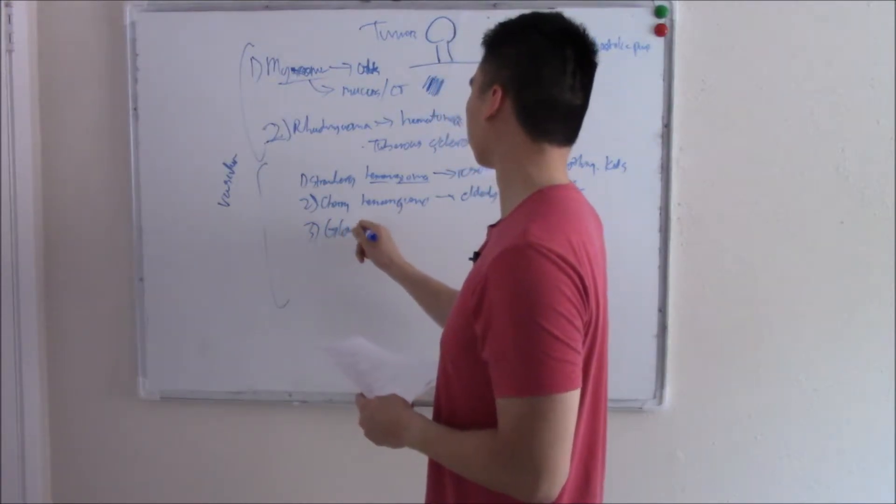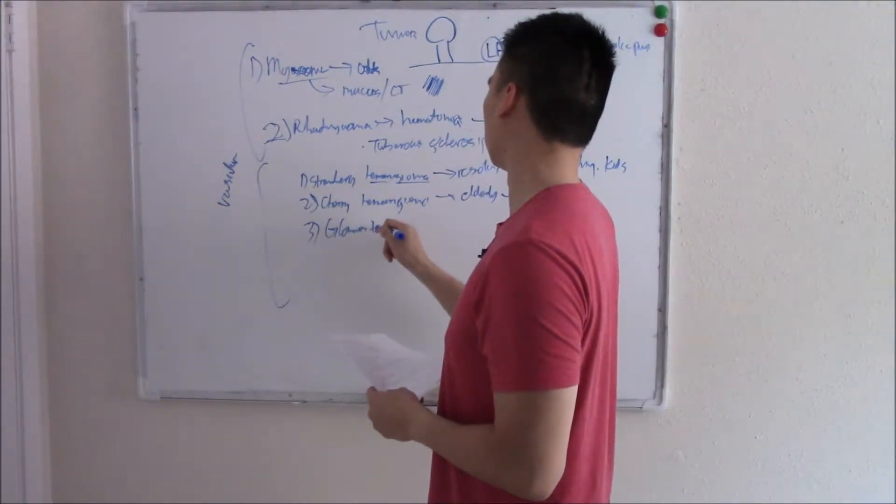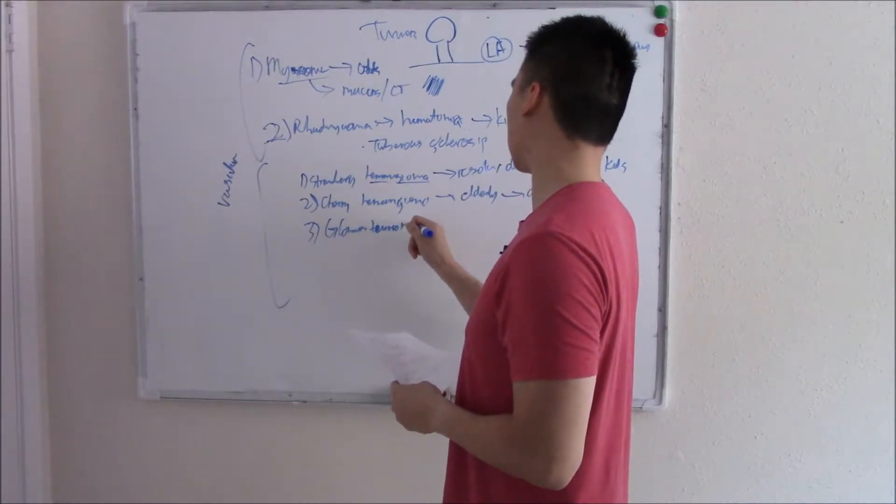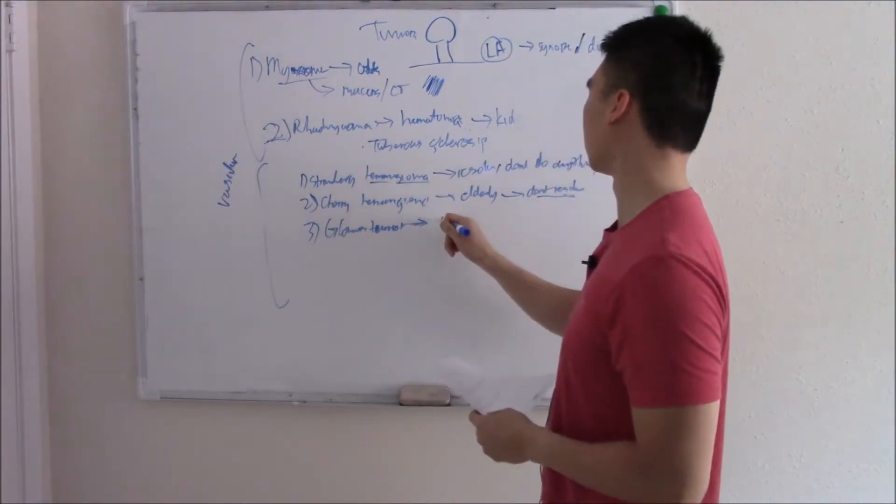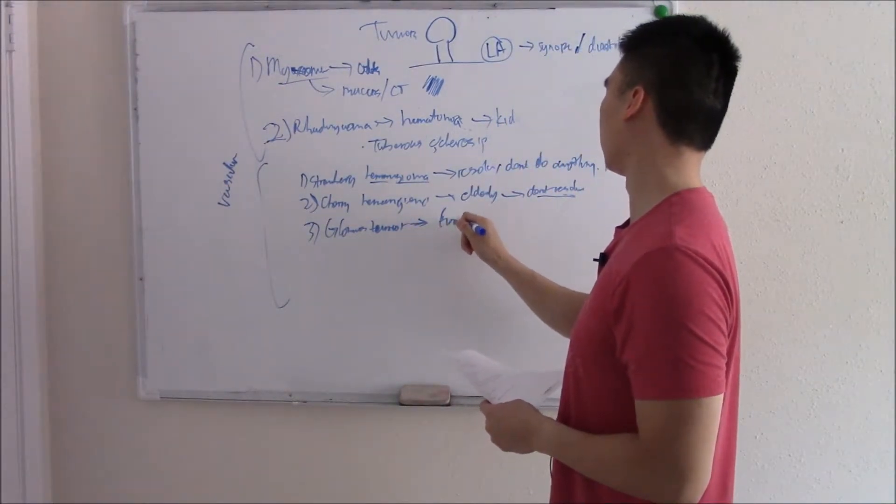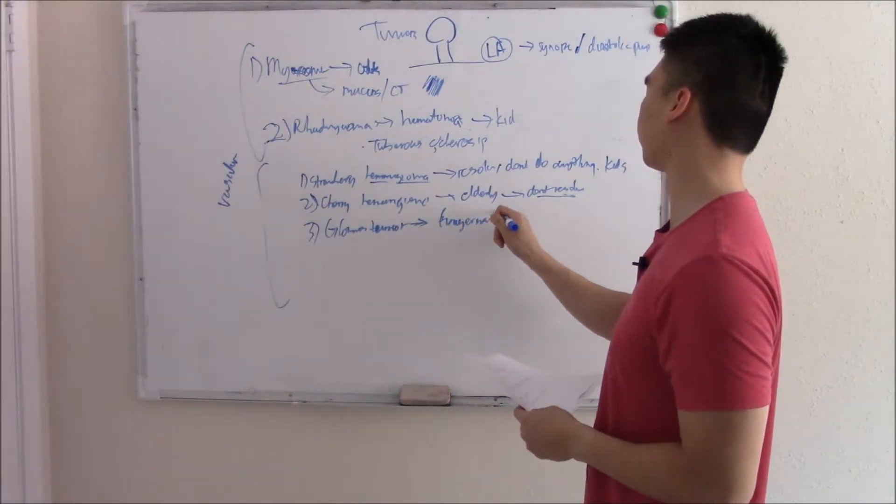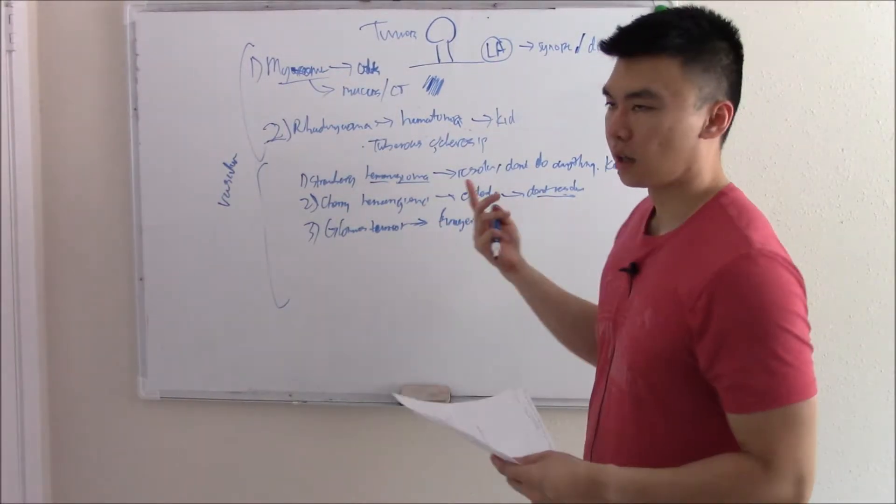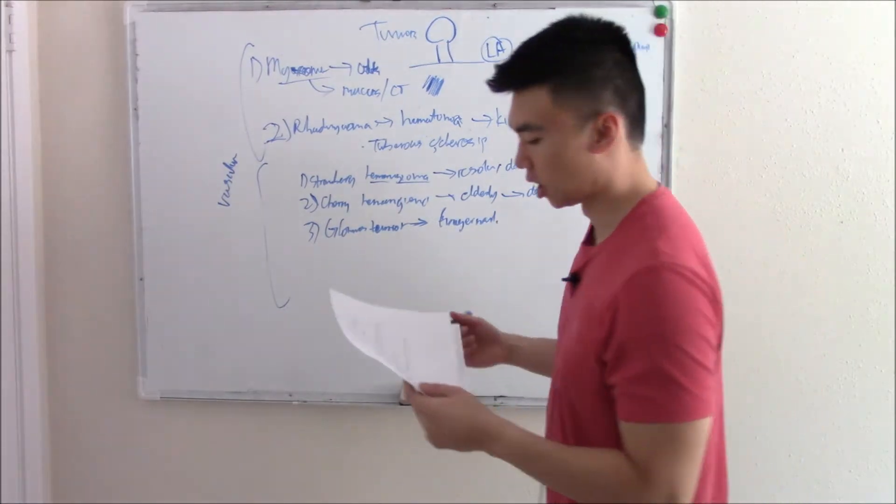Next one is glomus tumor. Has blood vessels in the tumor and is seen under the fingernail. The only thing you need to know. A little bump under the fingernail. Glomus tumor. Done.